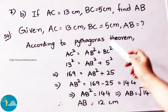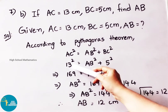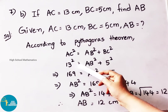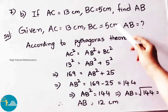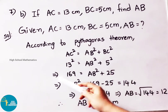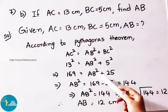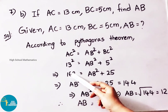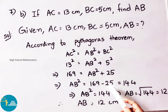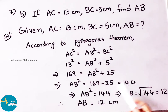According to Pythagoras theorem, AC square is equal to AB square plus BC square. Given AC value is 13, so 13 square equals to AB square plus 5 square. That implies 169 equals to AB square plus 25. Now AB square equals to 169 minus 25, so 169 minus 25 equals to 144. That implies AB square is equal to 144.